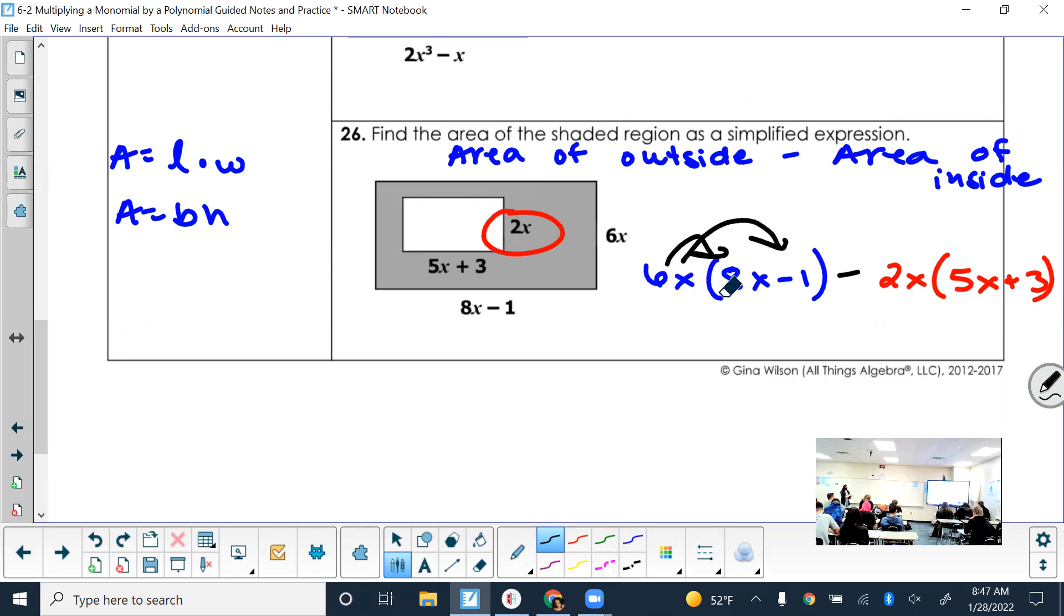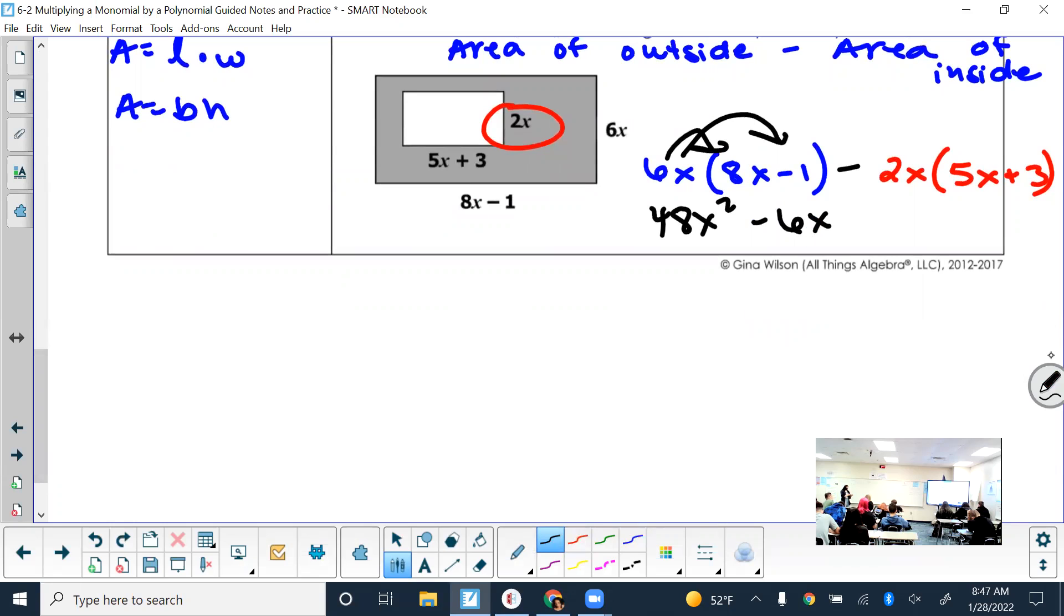So then what do we need to do from here? Distribute. What do you get from distributing the 6x? 48x squared. And negative 6x. So distributed, that's what we get. Then distribute the second set. And remember, it's a negative 2x that we're distributing. So negative 2x times 5x is what? Negative 10x squared. And then negative 2x times 3 is negative 6x. Check your answer. Are there any like terms that I can combine? What are they?